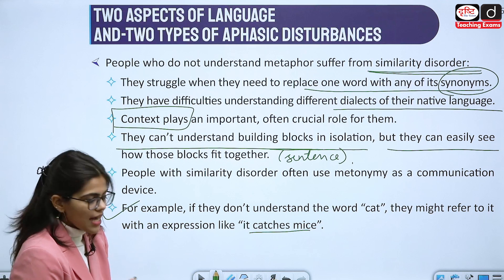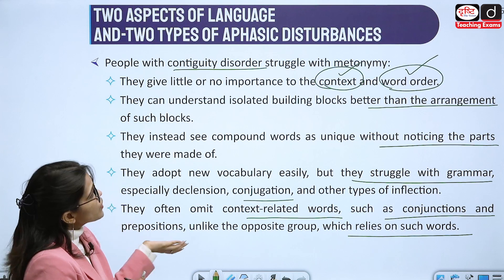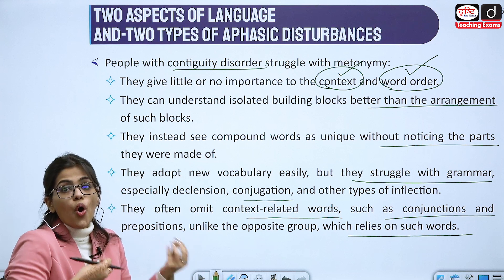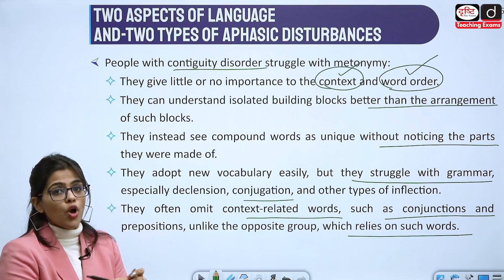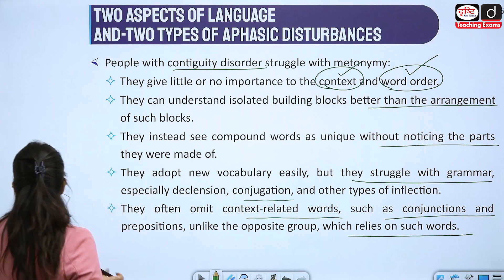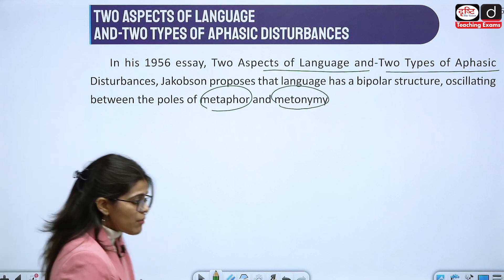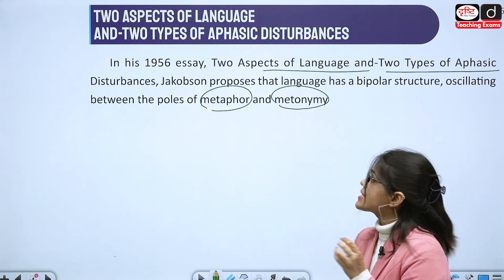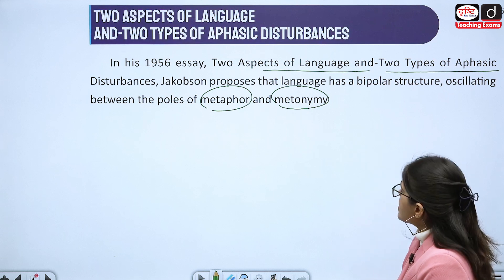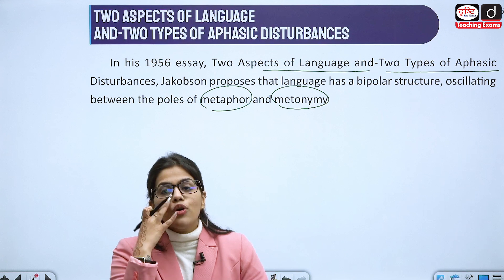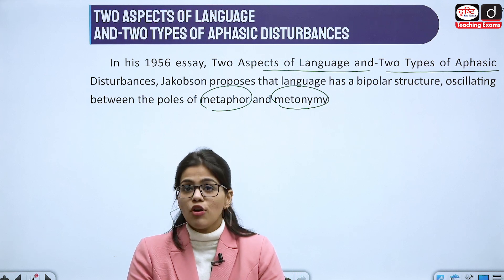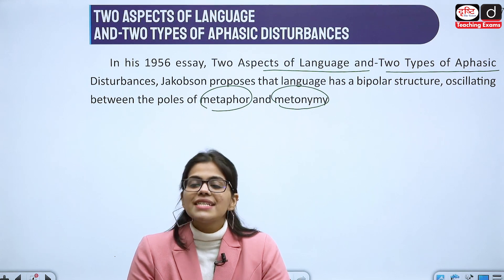In contiguity disorder you struggle with metonymy — context is given little importance, word order is given little importance, and they can understand isolated blocks but arranging them into a sentence is very difficult. Remember the name of the essay: 'Two Aspects of Language and Two Types of Aphasic Disturbances,' published in 1956. With this I will end the video — I hope you liked it and gained something from it. Thank you so much, I'll see you soon with another video. Bye bye.